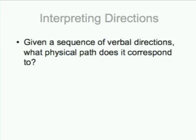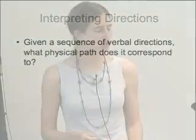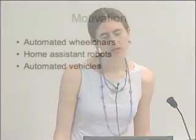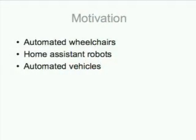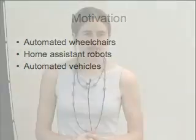This is the type of task we'd like to be able to do. We'd like people to be able to naturally give directions, and then a robot or an agent to interpret what is the physical path the user means. Given a sequence of verbal directions, what physical path does this correspond to? The first application is for automated wheelchairs — there are cases where people may not have the dexterity to handle a manual wheelchair or even one with a joystick, but they might still have use of their vocal cords.